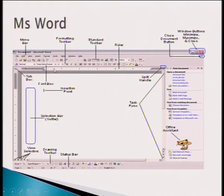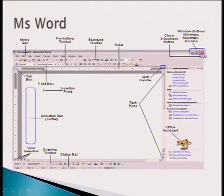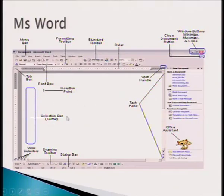Right here is the ruler. It essentially allows you to measure where your typing begins and where it ends. Right here is the scroll bar, which allows you to go up and down your document. With almost every window that you open, you are most likely to find three buttons: the close button, the maximize/restore, and the minimize button. At the bottom here you find the status bar. The white area is where you input your data — this is where you type.